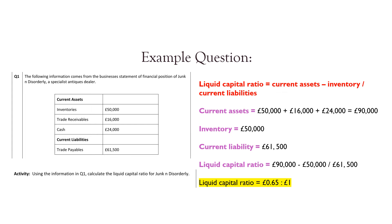Let's look at an example question. Using the same data from before, we're going to work out the liquid capital ratio. We need current assets minus inventory divided by current liabilities. We add up inventories, trade receivables and cash to get £90,000. Then inventory is £50,000 and the current liabilities are £61,500. So the liquid capital ratio is £90,000 minus £50,000 divided by £61,500, which means the liquid capital ratio is 0.65 to 1.